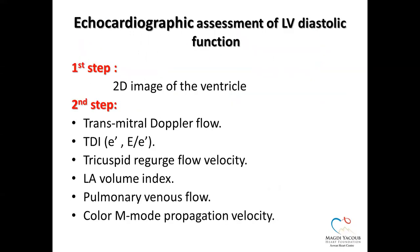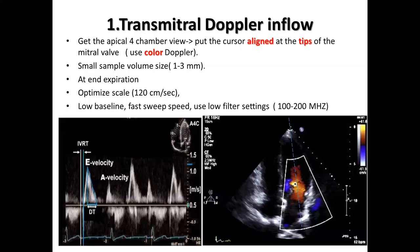Now let's go practical. The first step in assessment of LV diastolic function is to assess the systolic function and have a good 2D image of the ventricle to know the pathology and whether the ventricle is normal. The second step is to obtain the six major parameters to assess diastolic function: transmitral Doppler flow, tricuspid regurgitation jet velocity, E/e' ratio, LA volume index, pulmonary venous flow, and color M-mode propagation velocity. We will discuss each one in detail.